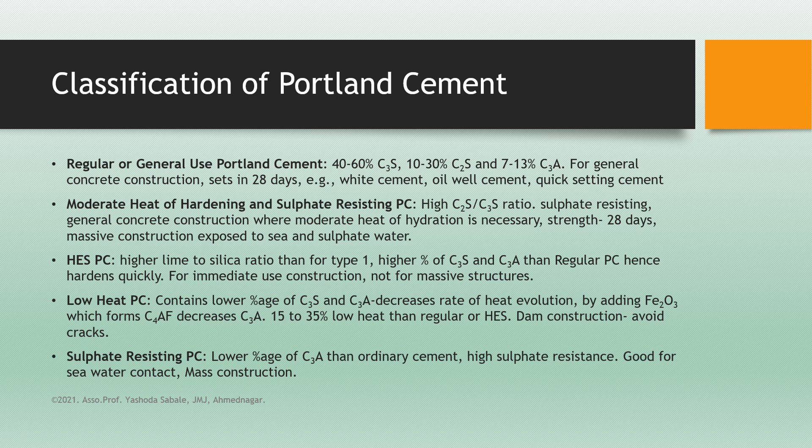Type 5 is sulfate resisting Portland cement. It contains a lower percentage of C3A than ordinary cement and has high sulfate resistance. It is good for seawater contact and massive construction.